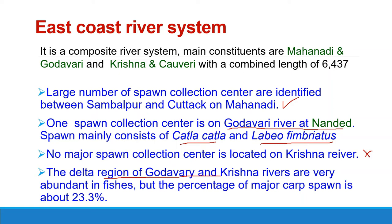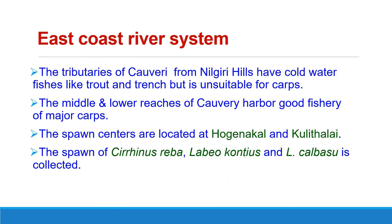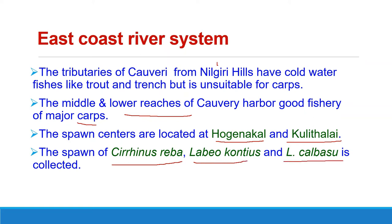No major spawn collection center is located on Krishna river, but the delta regions of these rivers are very abundant in fishes, although the percentage of major carp spawn is only 20.3%. The upper region of the Kaveri, being fast-flowing and sufficiently cool, is unsuitable for carp fishery. But the middle and lower reaches harbour a fairly good fishery of major carps. Spawn collection centers on river Kaveri are located at Hogenakkal and Kulithalai, where spawns of Cirrhinus reba, Labeo kontius, and Labeo calbassu are collected.